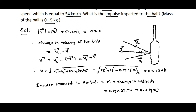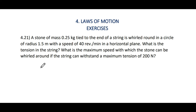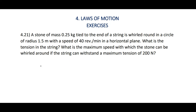This impulse acts along delta v bar, and the impulse is directed along the bisector of the initial and final velocities. Coming to problem 4.21: a stone of mass 0.25 kilogram tied to the end of a string is whirled round in a circle of radius 1.5 meter with a speed of 40 revolutions per minute in a horizontal plane.